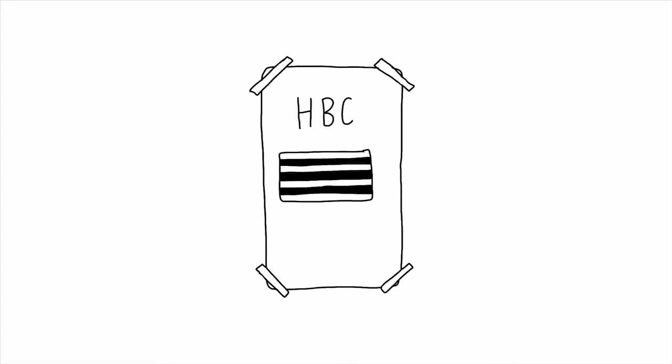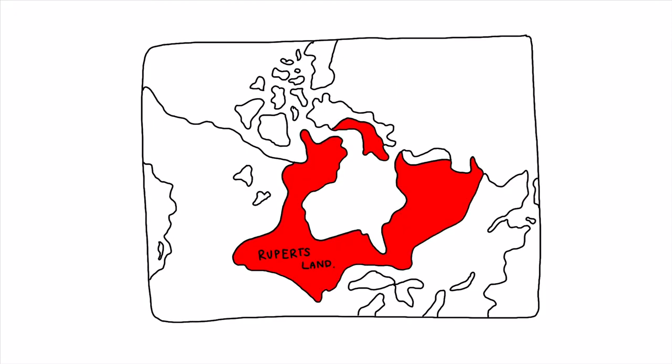Hudson Bay Company, a group of European settlers who traded fur and owned Rupert's Land, which Red River Valley was in.